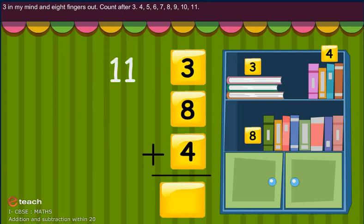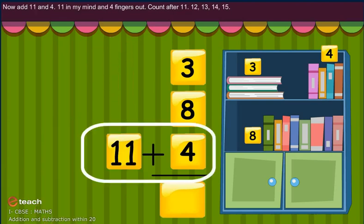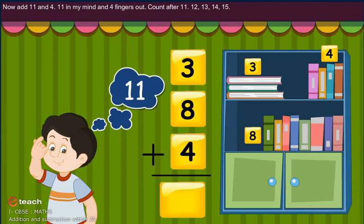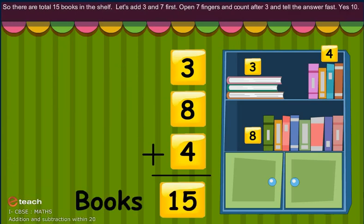Now add 11 and 4. 11 in my mind and 4 fingers out. Count after 11: 12, 13, 14, 15. So there are total 15 books in the shelf.